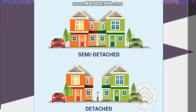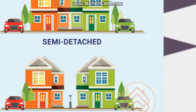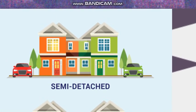Here we have semi-detached houses and detached houses. The difference between them is that semi-detached houses are connected, as we can see. But the detached houses are separated — they look identical, they look the same, but they are separated. We can see something right in between them, so they are not connected. In the semi-detached houses, we can see them connected and identical.